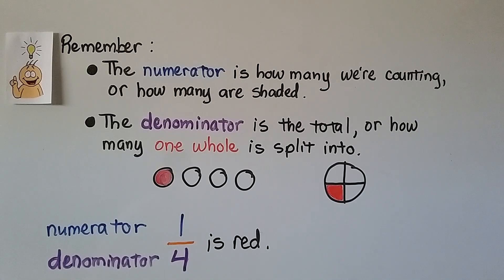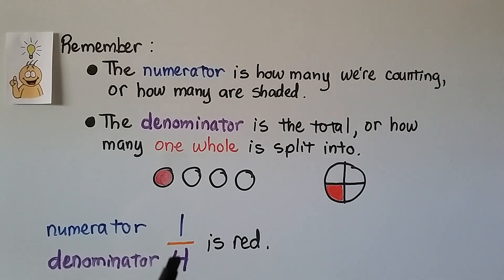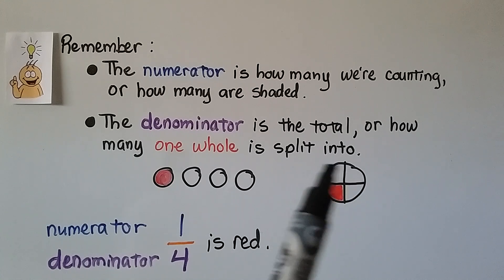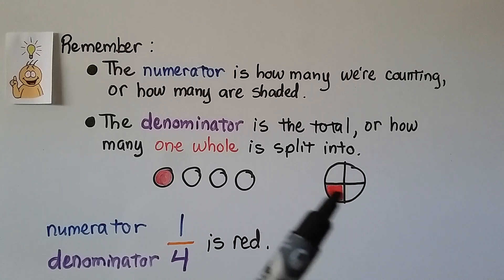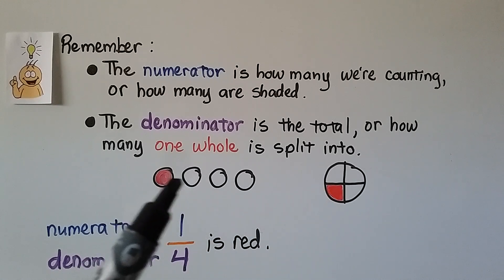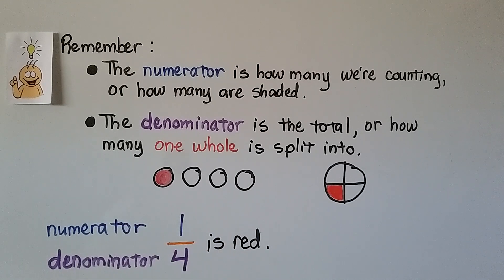Remember: the numerator is how many we're counting or how many are shaded, and the denominator is the total or how many one whole is split into. We have four circles here — one is red, so we say one fourth. That's in the whole group. We can also have one thing split into four parts and say one fourth is red. Whether it's a whole thing split into equal parts or a group of items, that's one fourth — one of four.